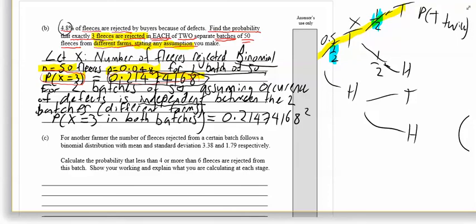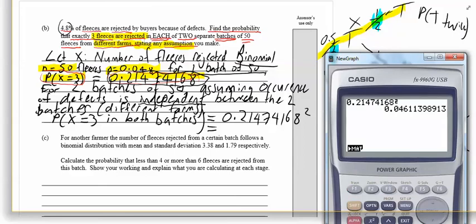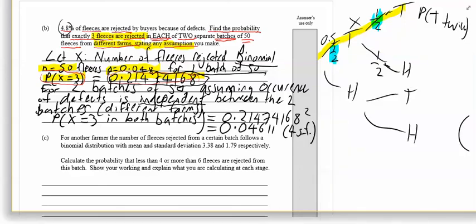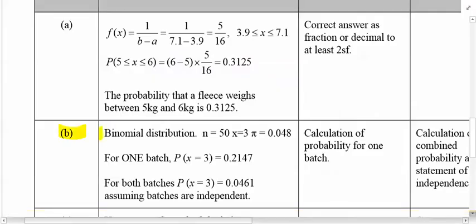To get 0.2147, etc., squared. Wake it into our calculator like so. And this must be our answer, and now we can round it because we're at the end. So 0.04611 to four significant figures. Like so. And we can check the marking schedule. Let's have a look.